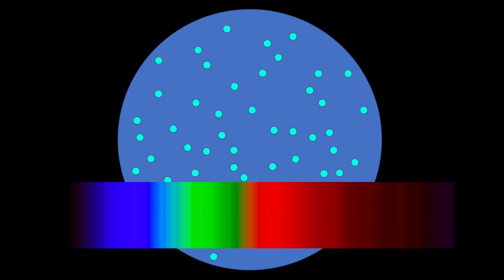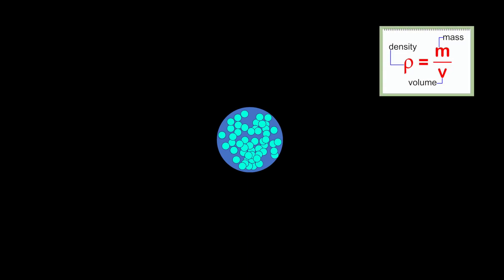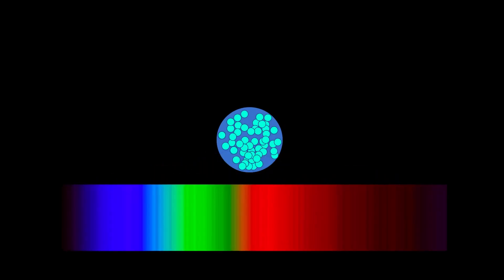If we shrink this supergiant and turn it into a star that's only a fraction of its original radius, but keep the amount of atoms the same, we'll have increased the density. Now if photons try to leave this small dense star, they'll interact with many atoms on the way out from the core, resulting in larger gaps in their absorption spectrum.